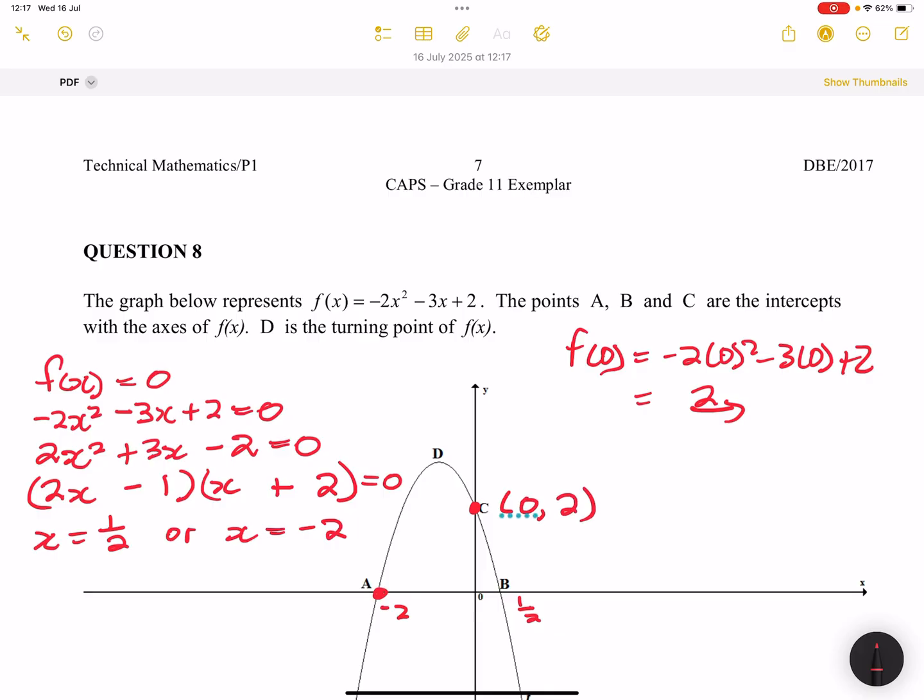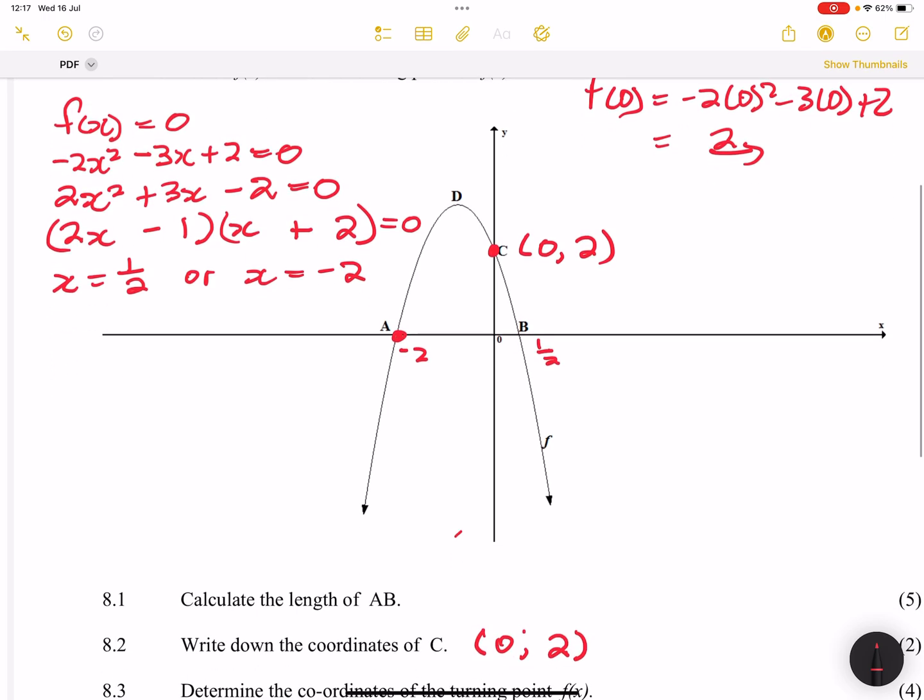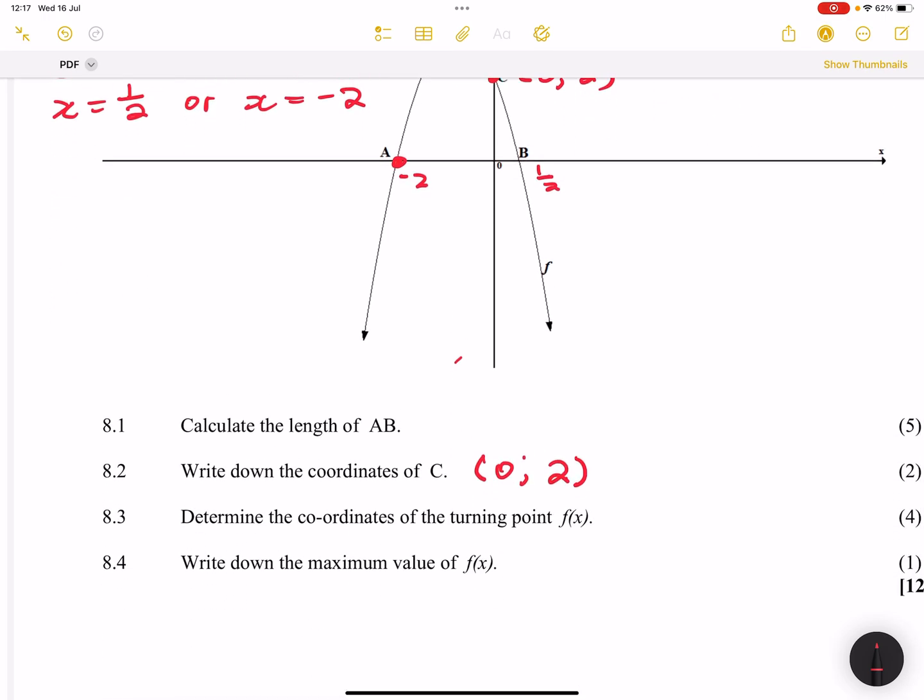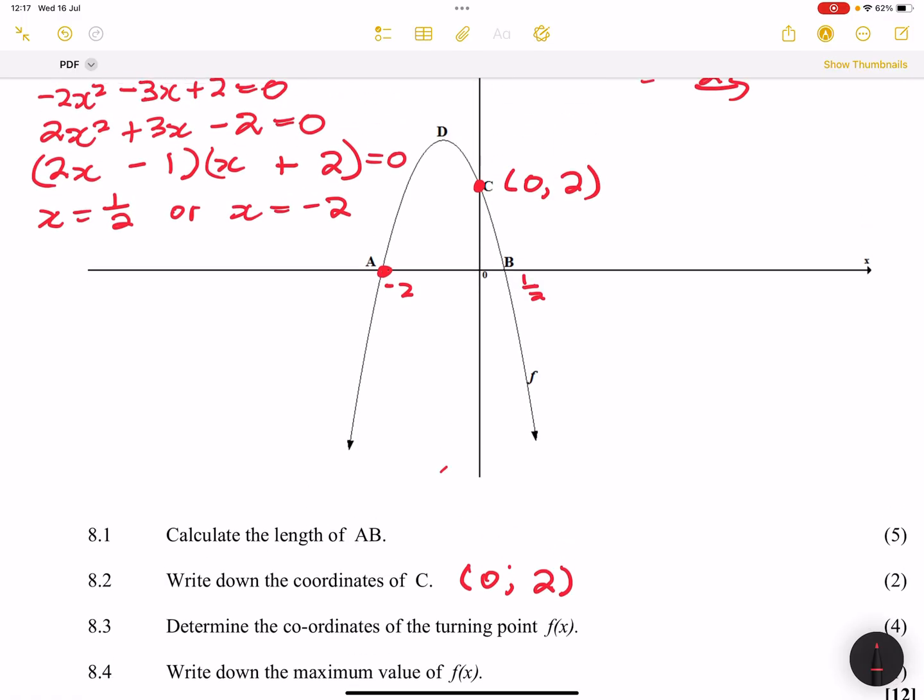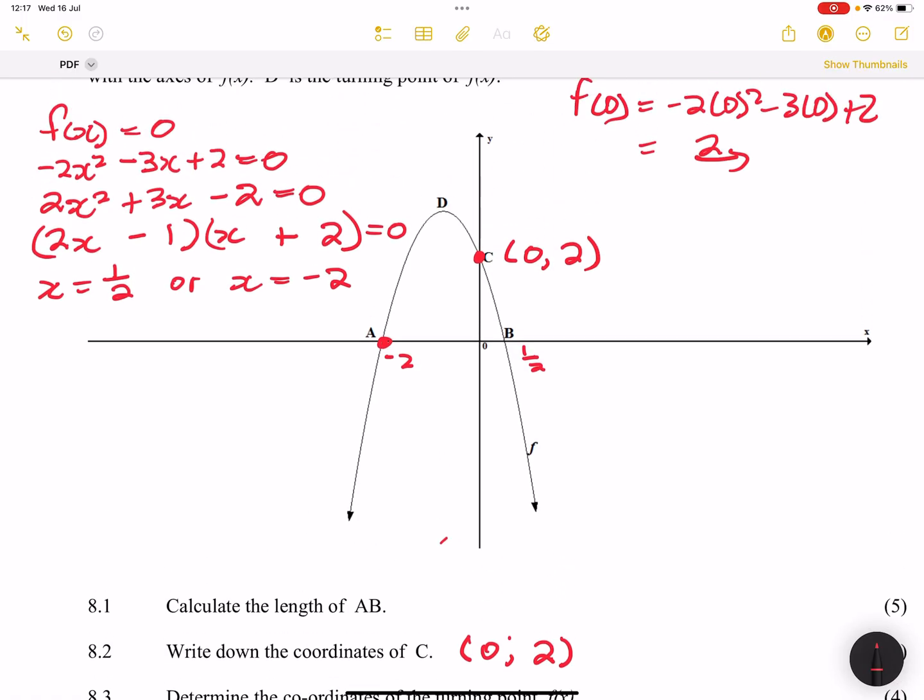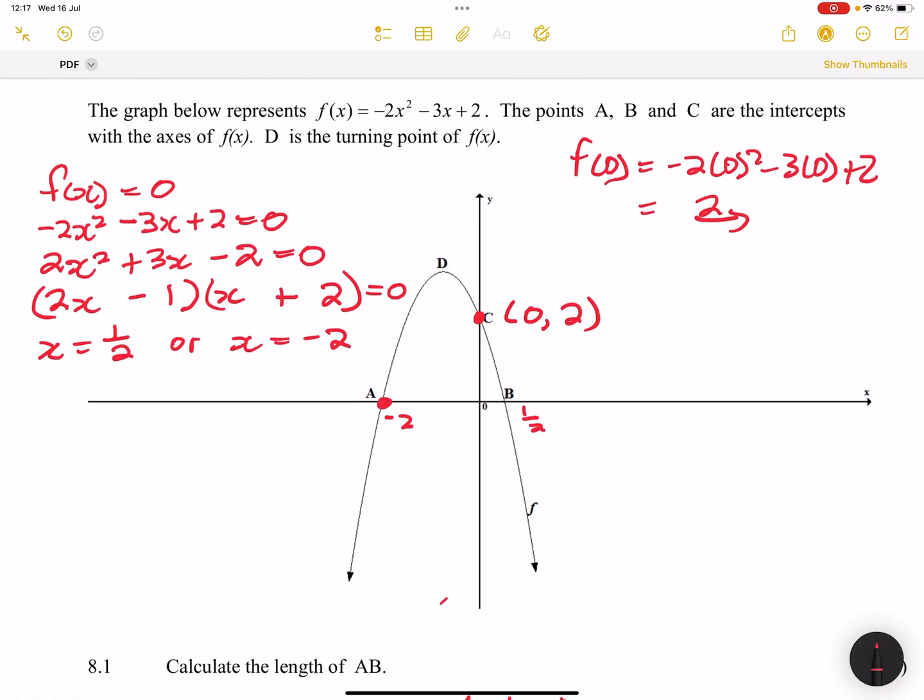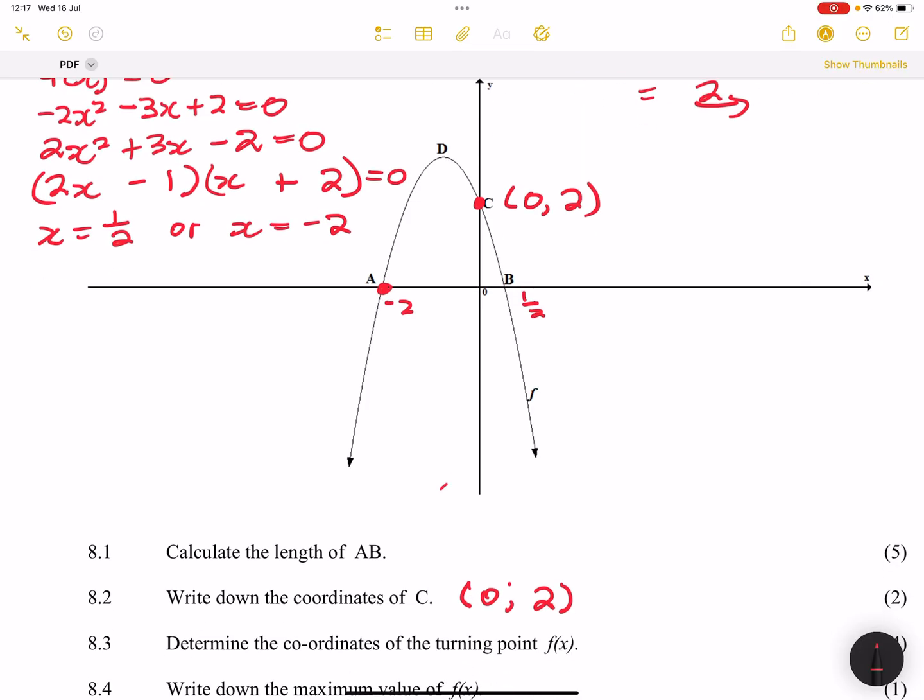Now let's go on to the next question. They say, determine the coordinates of the turning point, f(x). So for the turning point, there are two ways in which you do that, but let's stick to the conventional way. So the x value of the turning point, we will say, well, that's -b divided by 2a.